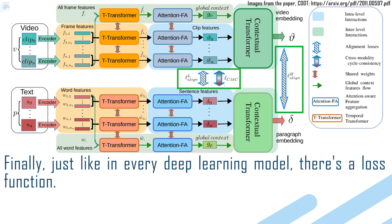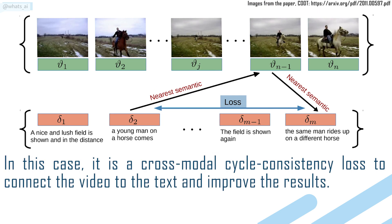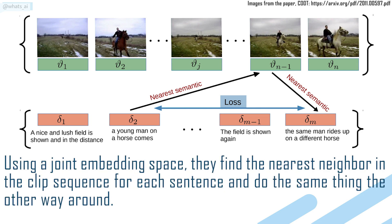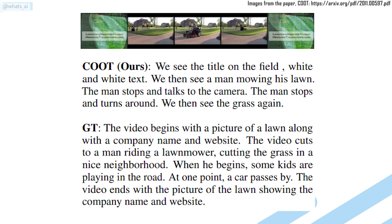Finally, just like in every deep learning model, there's a loss function. In this case, it is a cross-modal cycle consistency loss to connect the video to the text and improve the results. Using a joint embedding space, they find the nearest neighbor in the clip sequence for each sentence and do the same thing the other way around. Here's what their model outputs when trying to randomly caption the clips of a video and put it together.